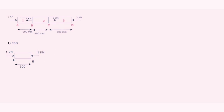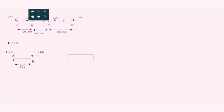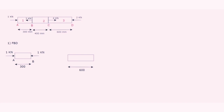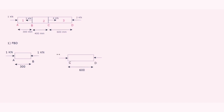Now for the FBD of the third member CD, the length is 600 mm. For the FBD of the third member, consider the rightmost force. The rightmost force is 2 kN, so put 2 kN force acting towards the body on both sides.